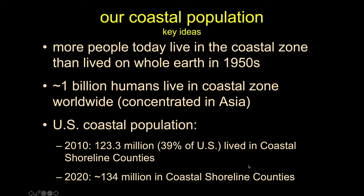We're talking more like two to two and a half billion people in the coastal zone using wider definitions. In the U.S., if we talk about our coastal shoreline counties, from the last decadal census, about 39% of all Americans — roughly 123 million people — lived in a county that touched seawater. We think the 2020 numbers will be more like about 134 million.